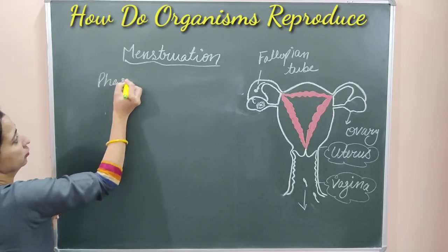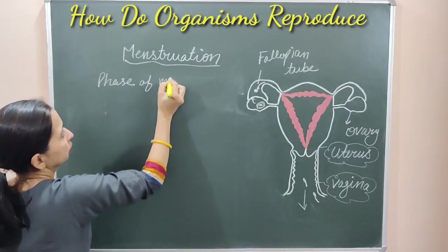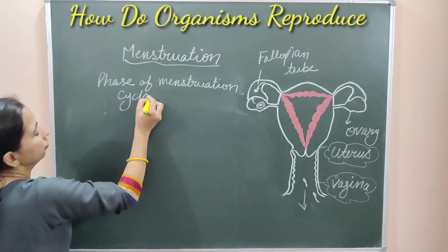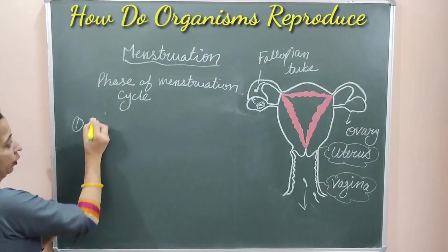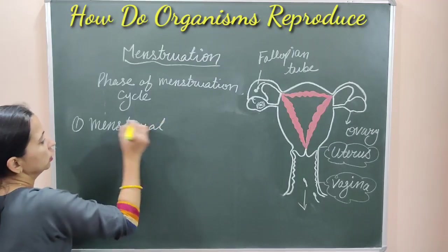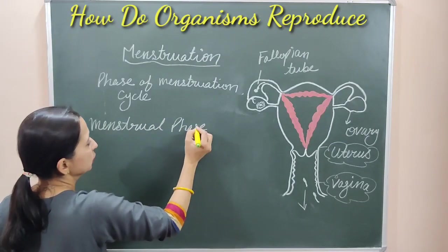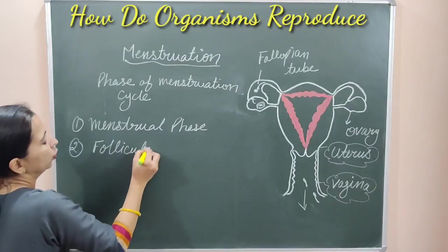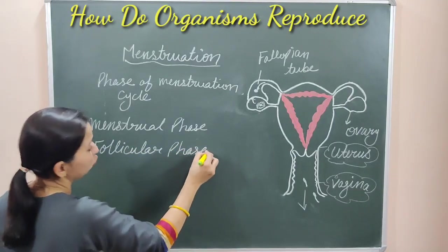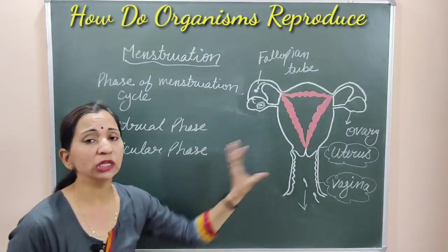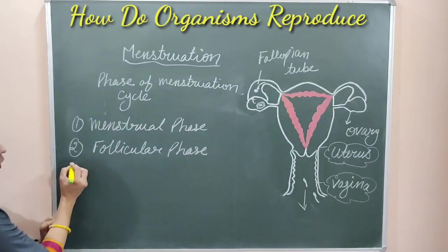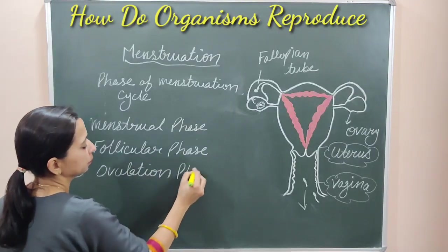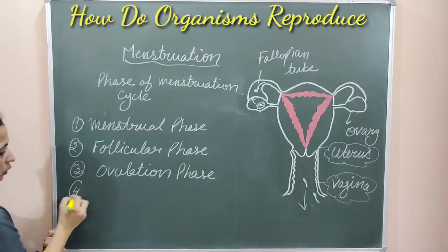These steps are repeated one after another. The phases of the menstruation cycle are: the first phase is known as the menstrual phase, the second phase is the follicular phase, the third important phase is the ovulation phase, and the last one is the luteal phase.